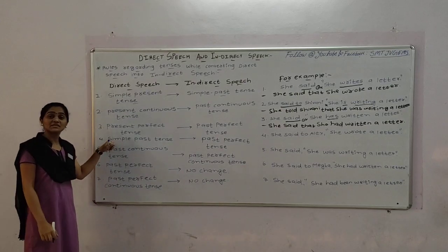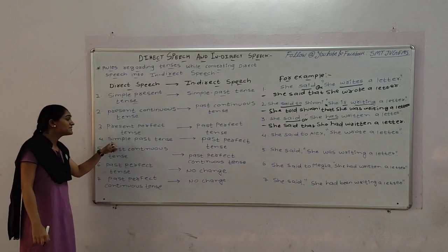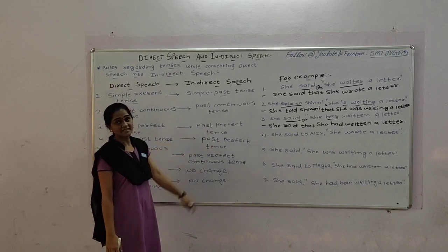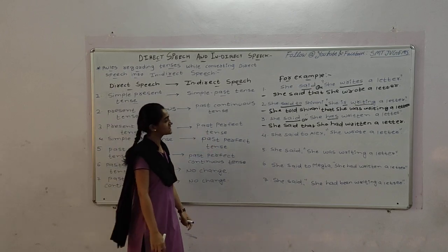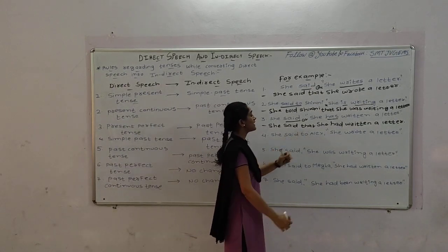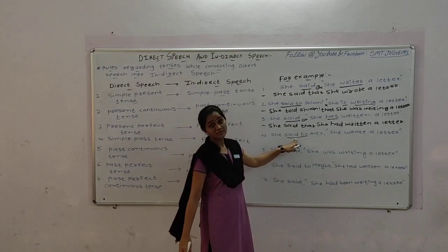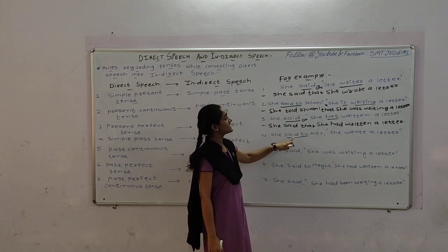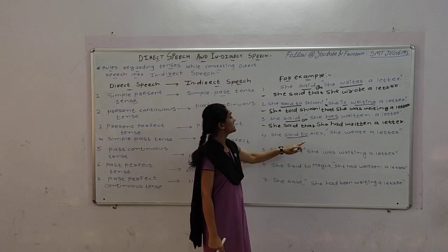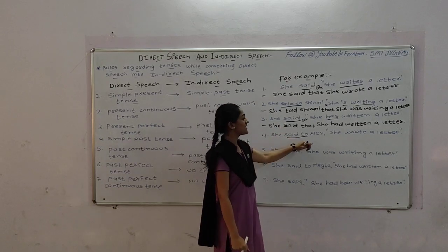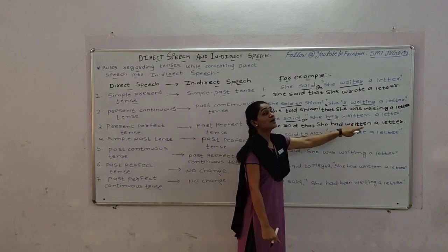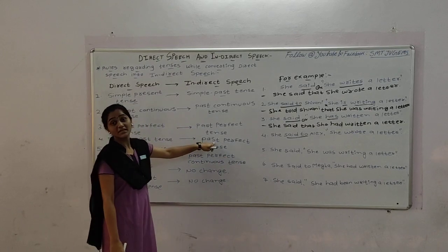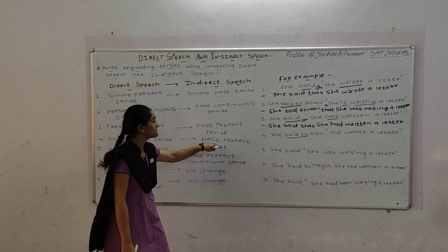The next tense is simple past tense. Simple past tense changes into past perfect tense. Let's see an example. She said to her — 'said to' has been given. As we know from the previous example, 'said to' changes into 'told'. She told. Simple past tense has been converted into past perfect tense.